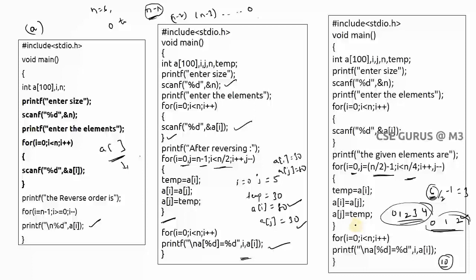If the question asks you to reverse only the second half of the elements, then j stays the same (at n-1) but i should start from n/2 + 1. The remaining logic stays the same. So depending on the question, you adjust i and j accordingly. This covers how to reverse elements in an array in all three scenarios. We'll see the next question in the next video lecture.